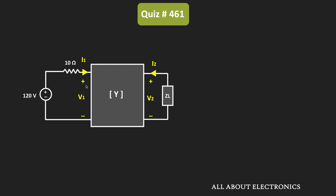Here, I1 and V1 are the current and voltage on the input side, while I2 and V2 are the current and voltage on the output side. The Thevenin's equivalent impedance is the equivalent impedance seen from the output side by considering all independent sources in the circuit as zero — that is, by treating this voltage source as zero.